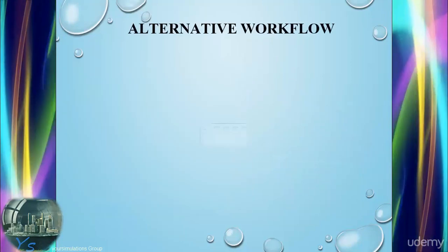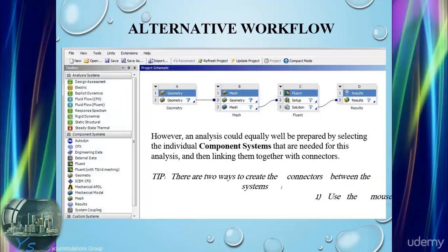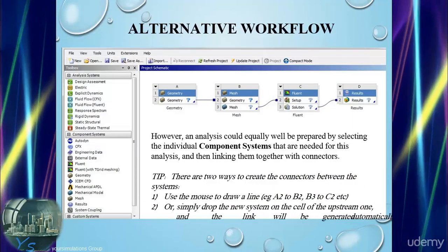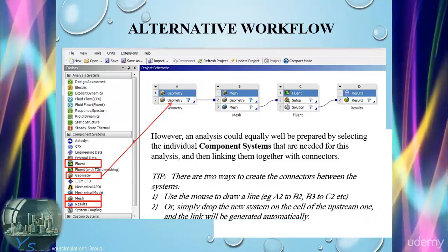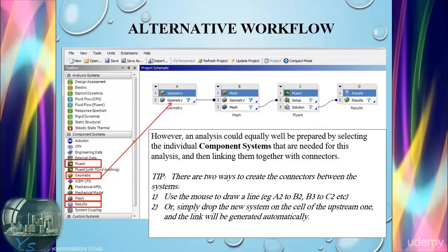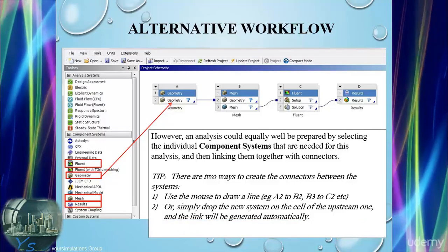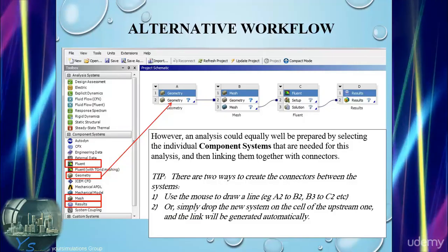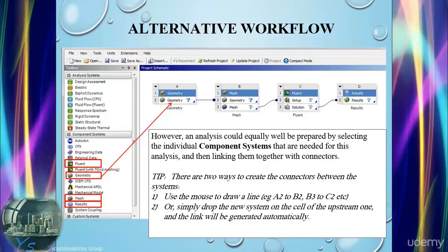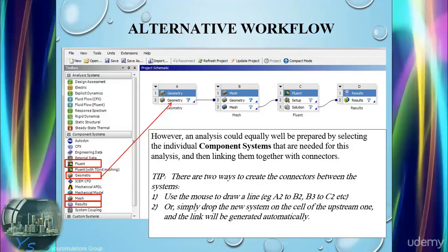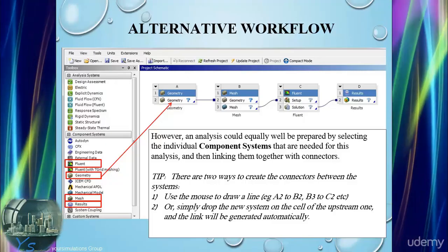A corresponding way to build up the same simulation is to do it from component systems rather than an analysis system. In this way we have individual elements displayed within the project schematic rather than the entire analysis system. To create this we can click and drag in the same way a component system — in this case geometry — and bring it into the project schematic.